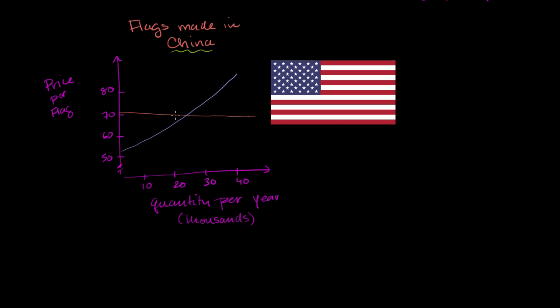If the price right now, the equilibrium price between where the supply and demand curves intersect, is right at about $70 per flag. So this is a pretty nice flag, right at $70 per flag. And the quantity demanded in thousands per year looks like it's about 25,000 flags per year.